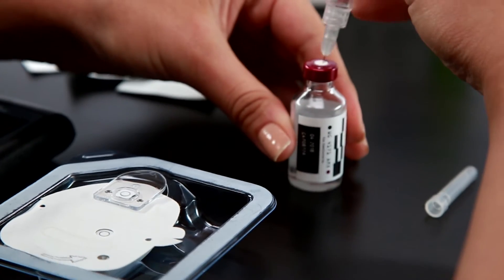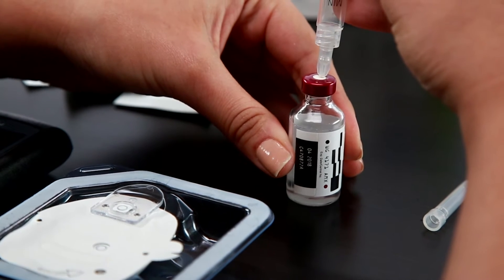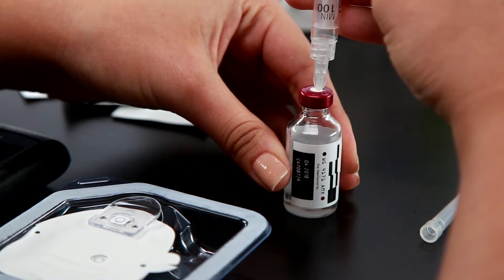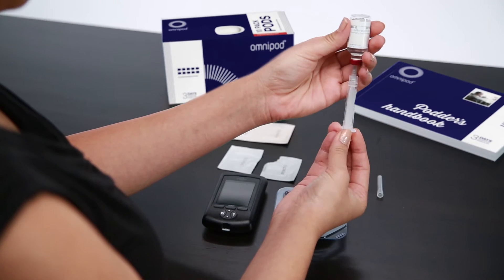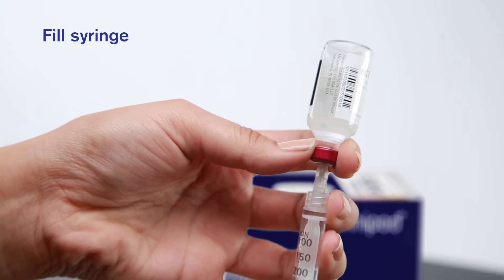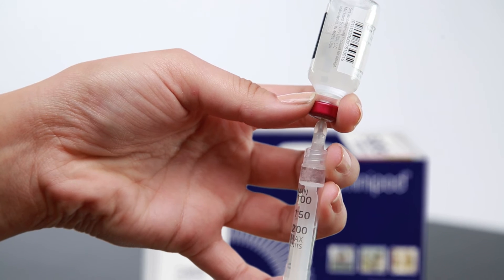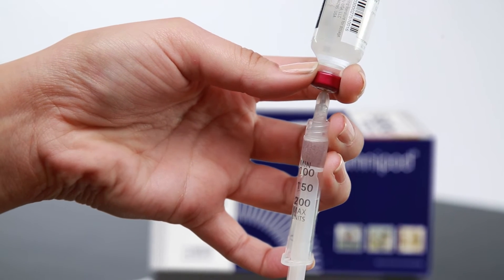Depress the air into the vial of insulin. With the needle still in the vial and your finger still depressed, turn the vial of insulin upside down. Fill the syringe with your needed amount of insulin. Be sure to remove any bubbles from the syringe.